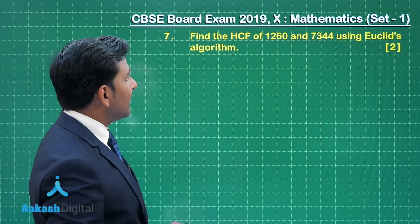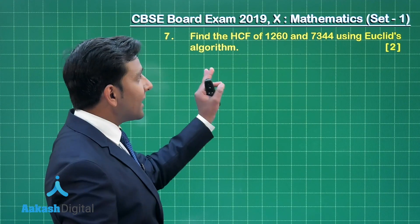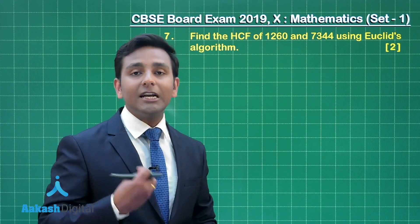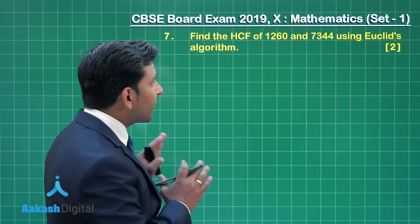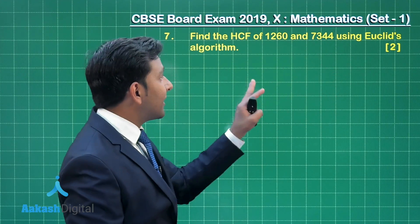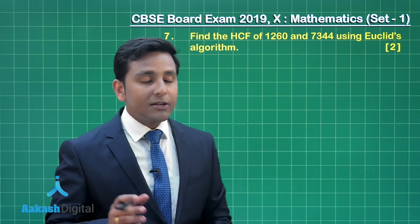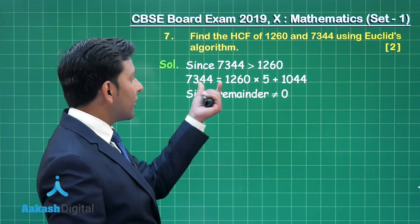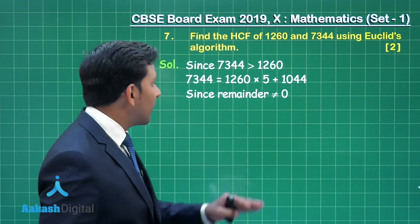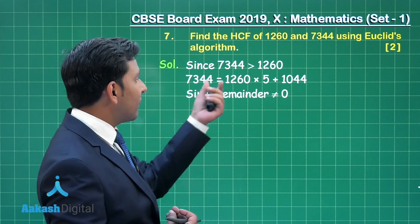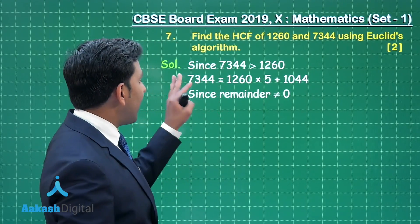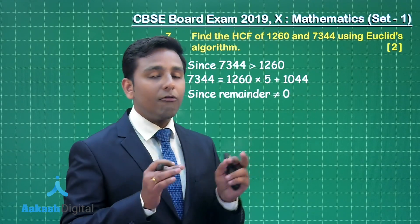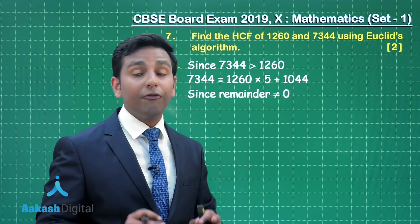Question number 7 is from Real Numbers, and it says: find the HCF of 2 numbers using Euclid's algorithm, that means we apply the concept of Euclid's division lemma. Out of the 2 given numbers, 7344 is greater than 1260. When we divide 7344 by 1260, we obtain quotient 5 and remainder 1044 using Euclid's division lemma.